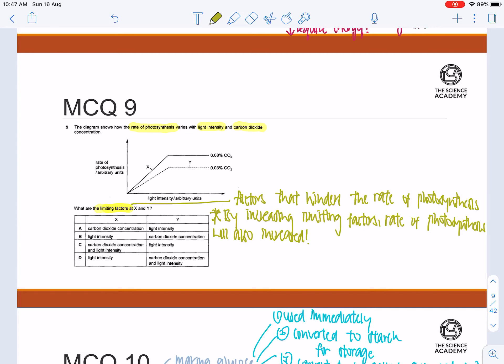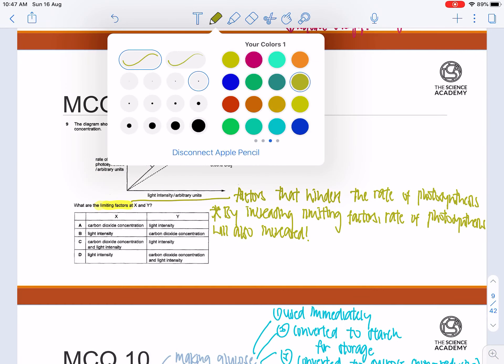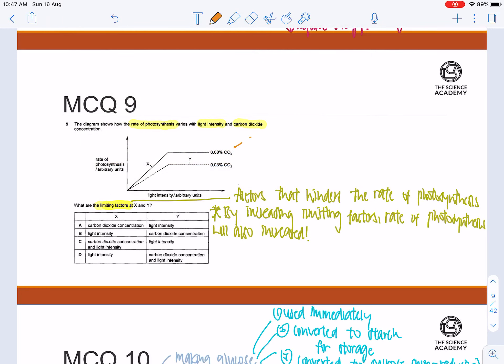So for this graph, let's label it as graph 1 and 2. Graph 1 shows a graph at 0.08% carbon dioxide, while graph 2 shows a graph at 0.03% carbon dioxide. So essentially graph 1 definitely will have a higher rate of photosynthesis because of the presence of a higher concentration of carbon dioxide as compared to graph 2.